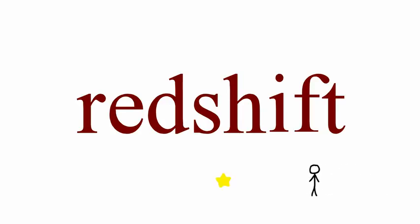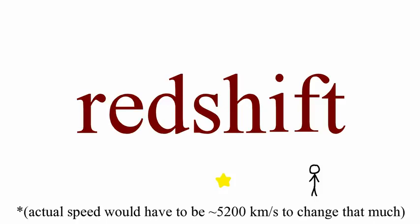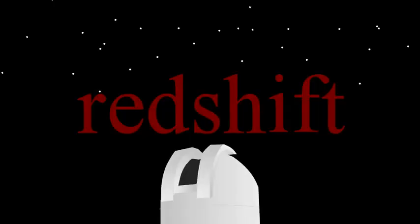Stars, or anything that you can see, change colour depending on their relative motion to you. Of course you can't see this minute difference with your eyes, but astronomers with the right equipment can use this effect to tell whether stars are moving away from, or towards, Earth.